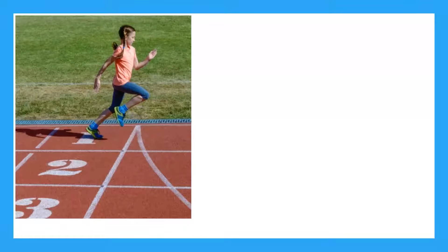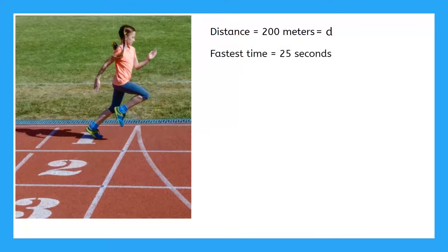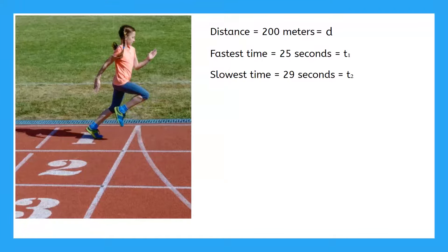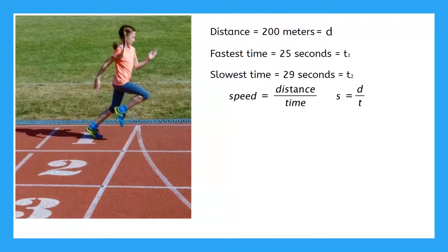Chloe is a track star. Her favorite race is the 200-meter dash, so her distance d is always 200 meters. Chloe's fastest time is 25 seconds — call that t1 — and her slowest time is 29 seconds — call that t2. Chloe wants to know her speed for each race. The equation for speed is distance divided by time, written as s equals d over t. Since d is always 200 meters, we write s equals 200 meters over t.